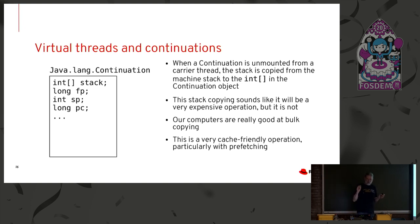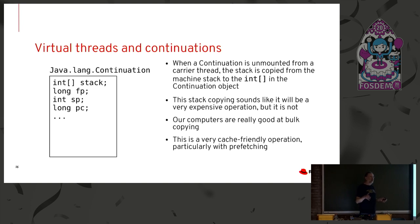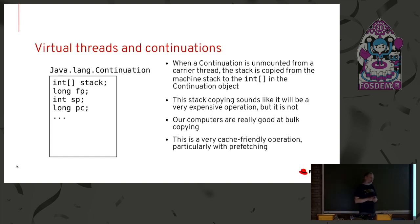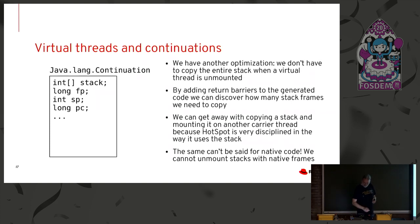It sounds like copying this stack is going to be a fabulously expensive operation, but it actually isn't. One reason is that our computers are tremendously good at bulk copying. Programs spend most of their time just moving stuff around, so the people who design our computers have gone to extraordinary lengths to make moving stuff around very fast — particularly with caches, and accessing dynamic RAM sequentially is very quick with prefetching. We don't actually have to copy the entire stack when a virtual thread is unmounted — only the frames that have been altered since last time we unmounted the virtual thread. The details of how this works involve return barriers.